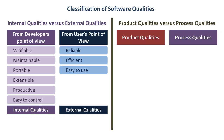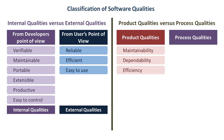Now let us see the product qualities: maintainability, dependability — it means that users should rely on software with complete confidence — efficiency, meaning the software's performance capability should be good, and usability — it is the quality of the user experience when using the software.